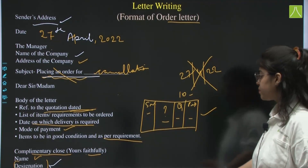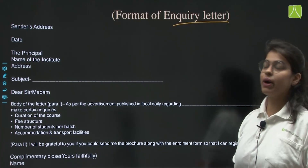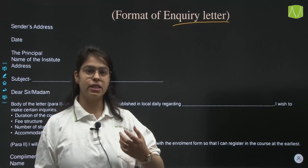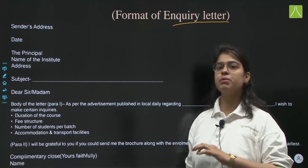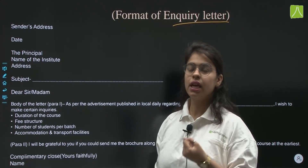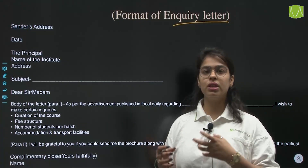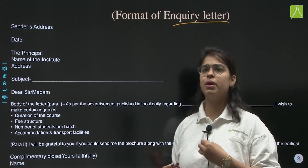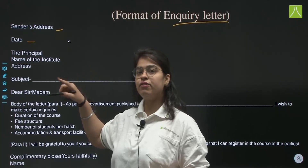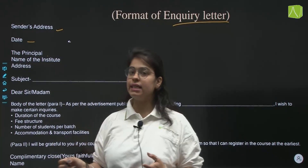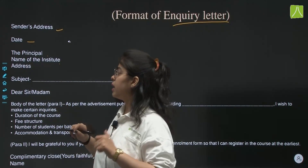Next we have the format of the inquiry letter. In an inquiry letter, you enquire about certain things — for example, after finishing intermediate school you are going to college, or you saw an advertisement in a newspaper about yoga classes or baking classes you want to join. You write the sender's address, the date in the same format as before, then the principal, dean, or instructor's name, the name of the institute, and the address including city and state.